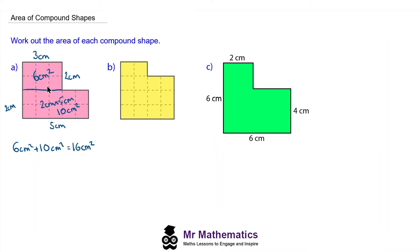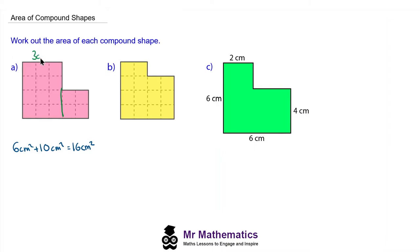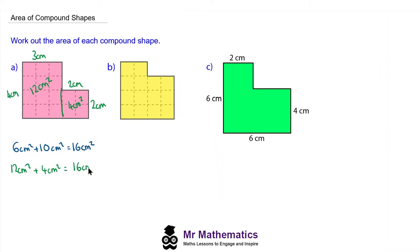Now I want to show you two other ways we could have worked out this area. Rather than drawing the line along here to create two shapes, we could have drawn the line down here. So now we've still got two rectangles — a three centimeter top and a three by four centimeter rectangle which is 12 centimeters squared. And then we've got a two by two which gives us an area of four centimeters squared, with a total area of 16 centimeters squared.